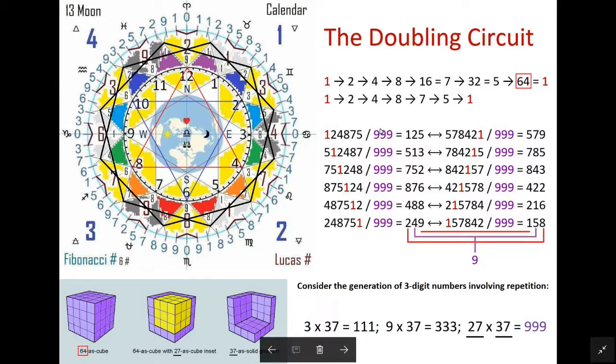But you will see that all of the numbers will be divisible by 999, which is a very special number. It has everything to do with the solid geometry and the inset of the cube, which is 27 or 3 times 3 times 3.